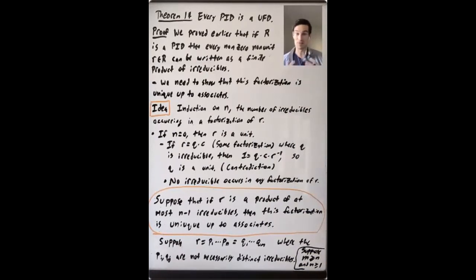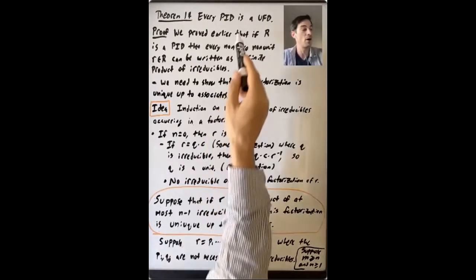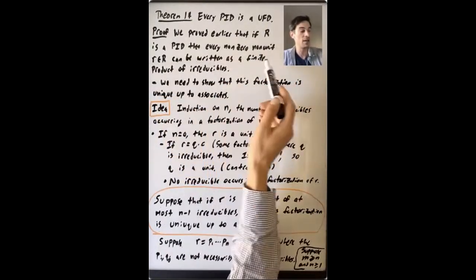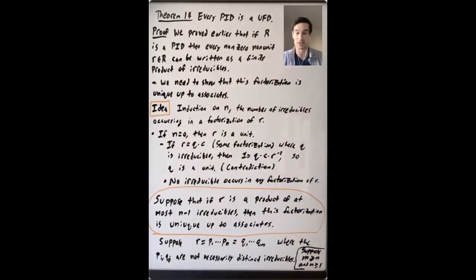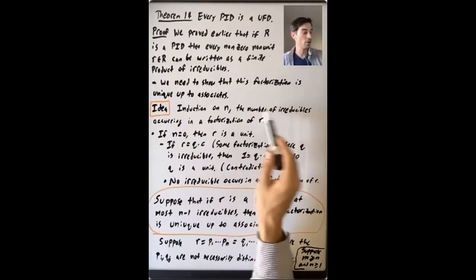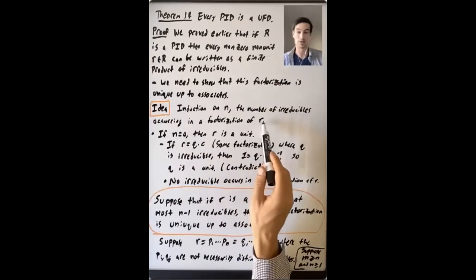and that factorization is unique up to associates. We proved earlier in this lecture that the first part holds — that if R is a PID then every non-zero non-unit r can be written as a finite product of irreducibles. So we just need to show this second part: that the factorization is unique up to associates. The idea is to do induction on n, the number of irreducibles occurring in a factorization of r.